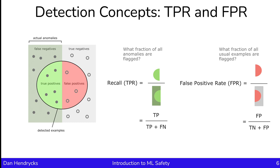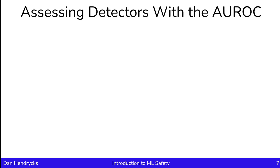To build up to anomaly detection metrics, we'll need to discuss the true positive rate and the false positive rate. The true positive rate, also called the recall, is the true positives over the true positives plus the false negatives. So there's the set of actual anomalies, and then there's the fraction of those that are actually identified. The false positive rate is what fraction of the usual examples are flagged—that is, how many of the non-anomalous examples were incorrectly flagged as anomalous. This is the false positives over the true negatives plus the false positives.